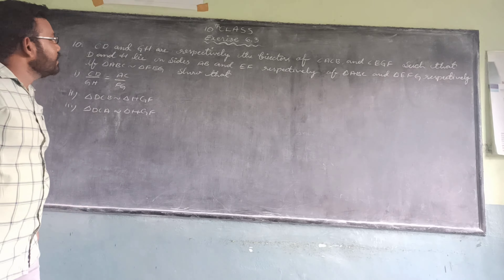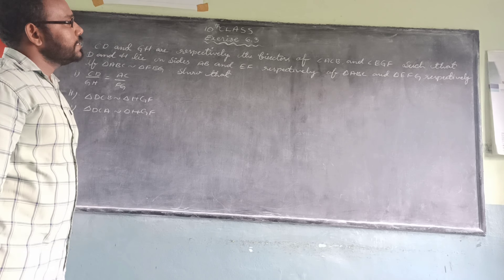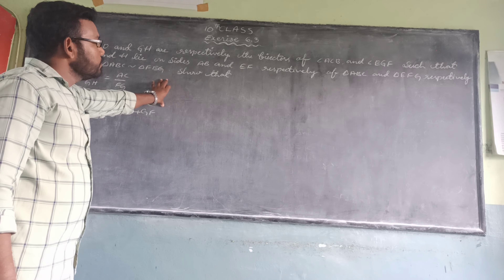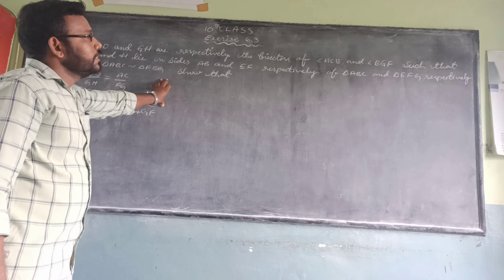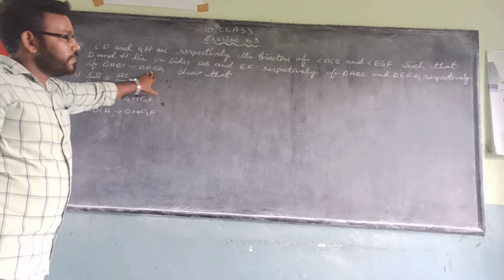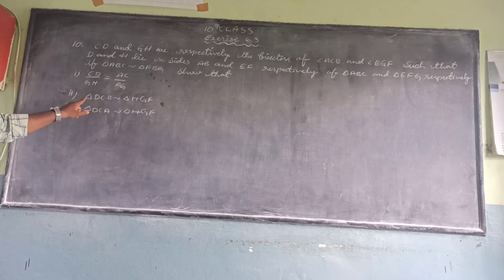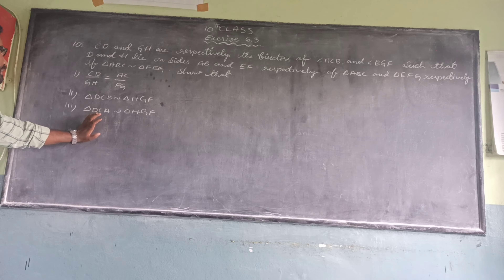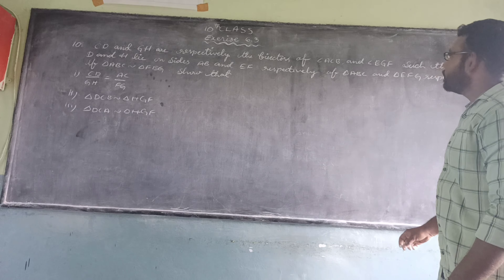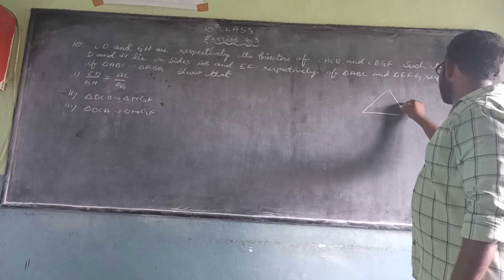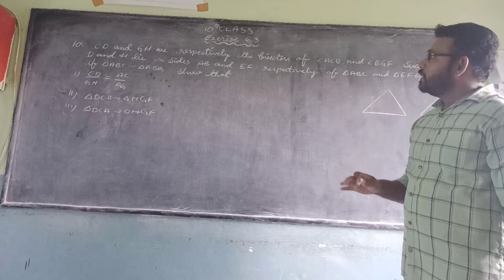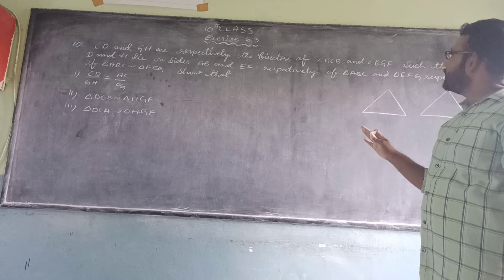The 10th question: CD and GH are respectively the bisectors of angle ACB and angle EGF, such that D and H lie on sides AB and EF respectively. If triangle ABC is similar to triangle FEG, show that CD/GH = AC/FG, triangle ACD is similar to triangle FGH, and triangle DCB is similar to triangle HGE.